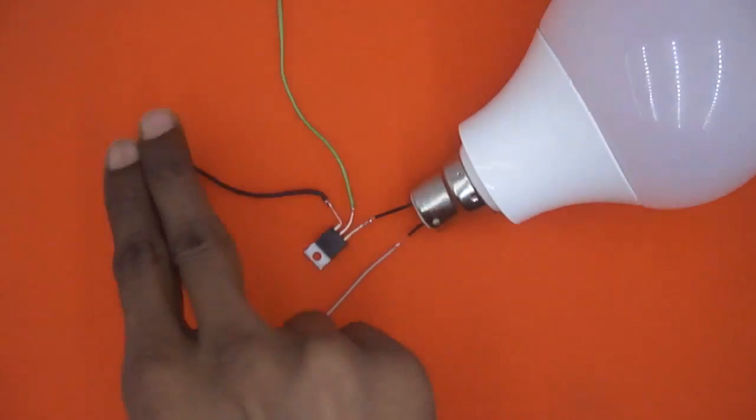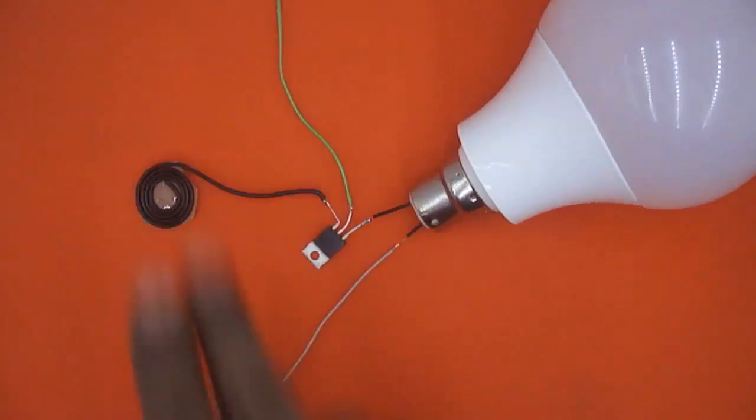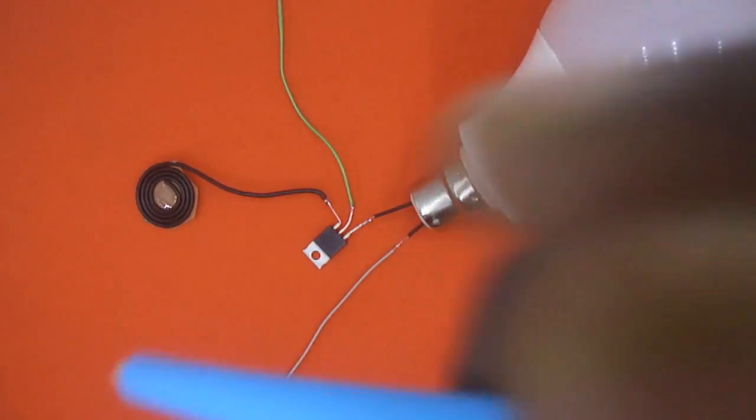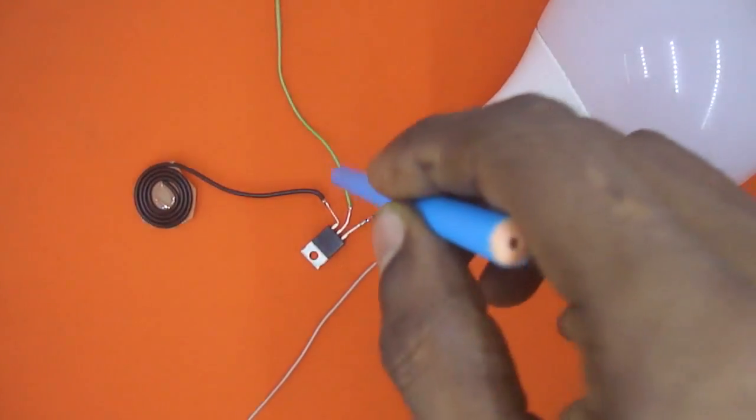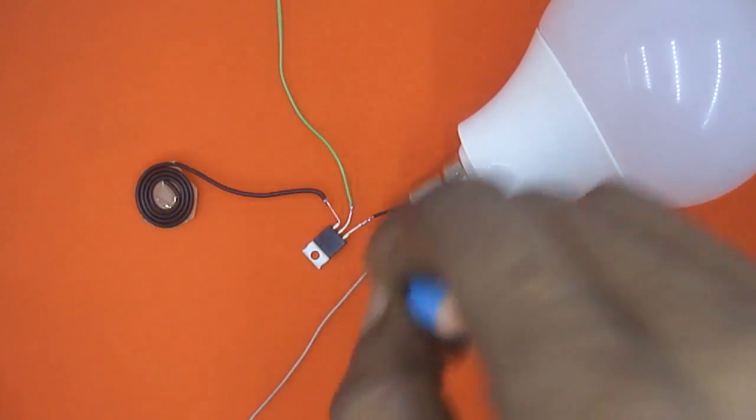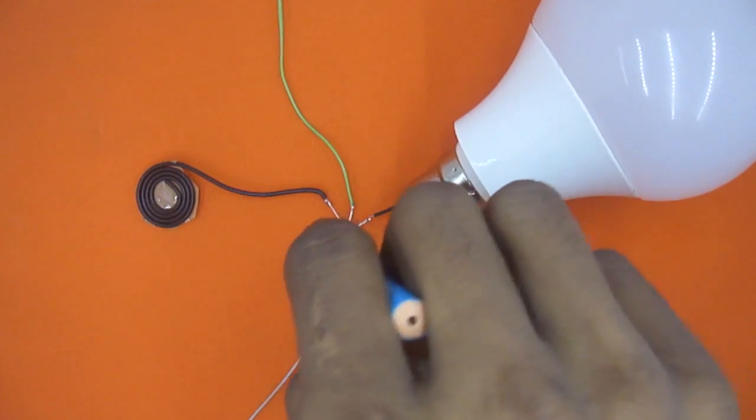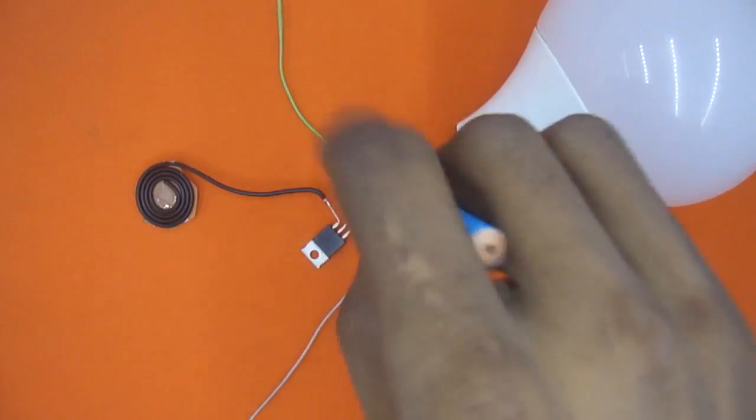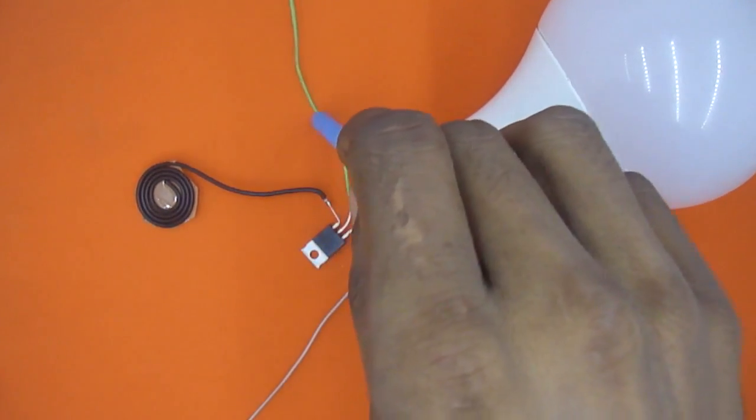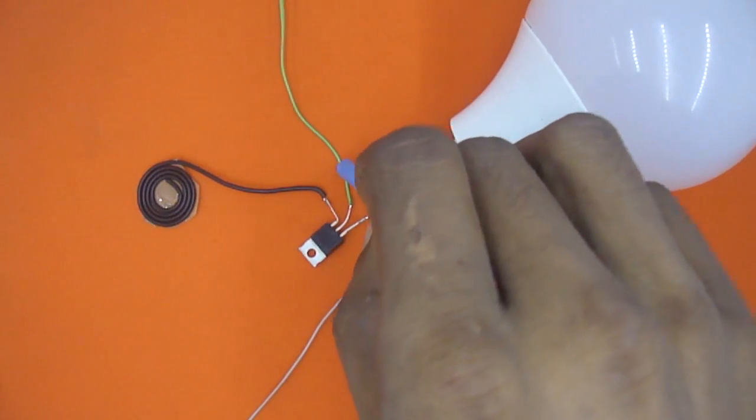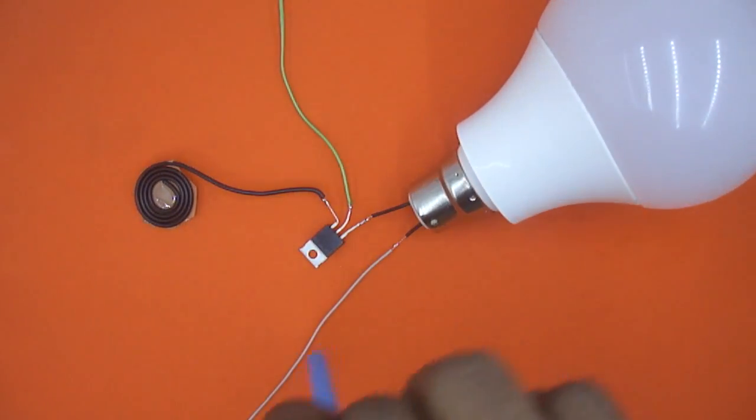Here you can see whenever I am touching, the bulb is glowing. Now, there are few important things like the power supply, the two wires coming from power supply. The wire which is connected to the T2 pin of this triac, this wire must be the neutral wire of power supply and this must be the phase.